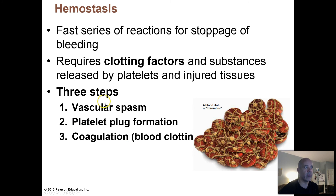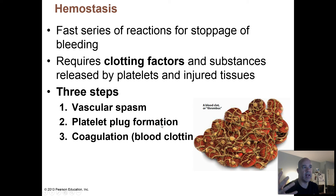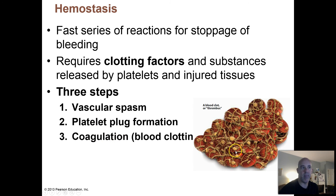To get to this, you proceed through three major steps. First is vascular spasm, where a torn blood vessel spasms or contracts to help close off the injury. Then platelet plug formation — platelets come in and attach to tears in the blood vessel walls to seal off that opening. Finally, blood clotting, also called coagulation, which is the formation of this fibrin mesh that traps red blood cells and more permanently seals off the wound so it can heal.